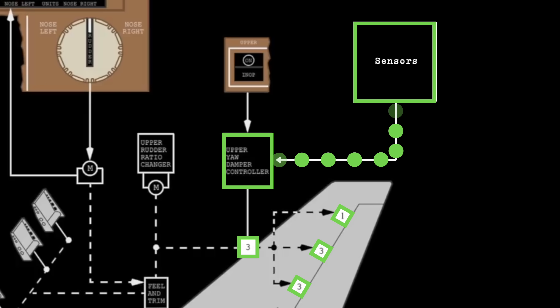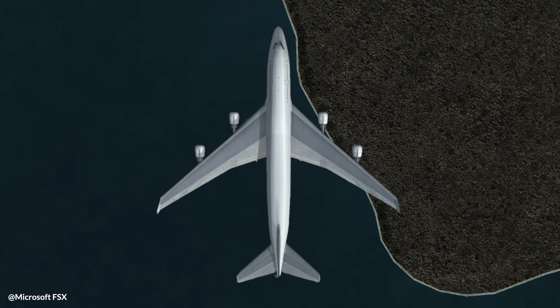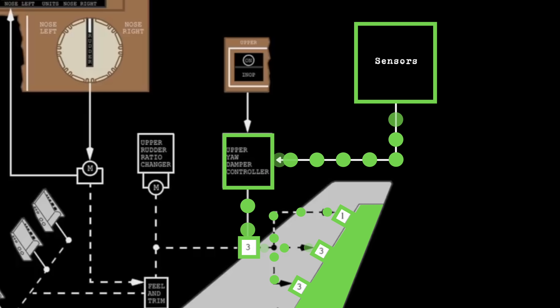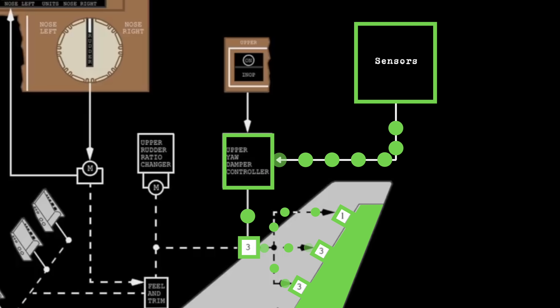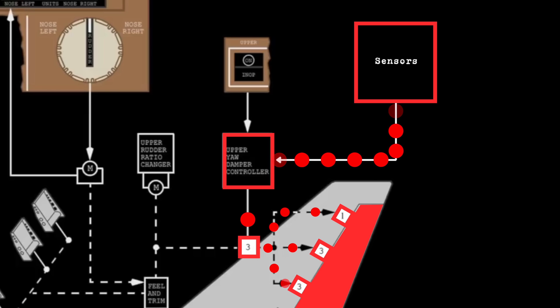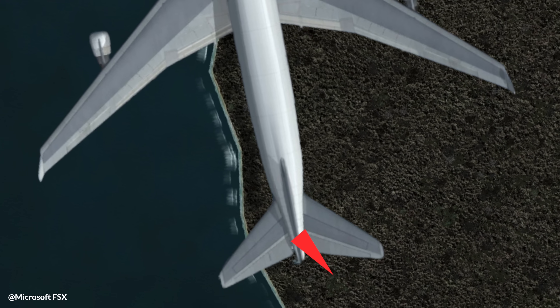The yaw damper translates sensor information into corrective rudder inputs of between three to six degrees. If we are intended to fly in a straight line but due to internal or outside forces we yaw off course, the yaw rate gyroscope — which detects abnormalities in the yaw direction — comes into action. This instrument is like a super-sensitive compass that quickly identifies if the plane is veering off course, and if it does, it sends a corrective signal to the yaw damper, which then signals the rudder actuators to deflect in the correct direction to bring the plane back on course.